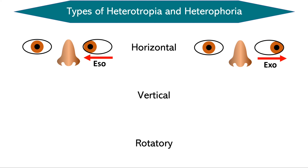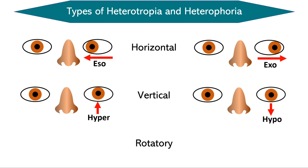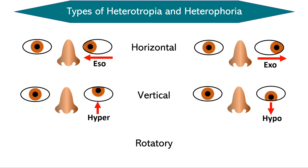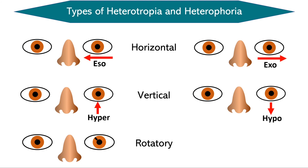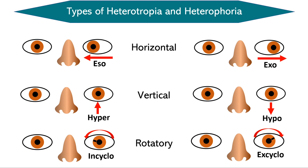Vertical deviation can be of two types: upward deviation known as hyper, and downward deviation known as hypo — giving hypertropia, hyperphoria, hypotropia, and hypophoria. Rotatory deviation is also of two types: inward rotation toward the nose is incyclo, and outward rotation toward the temple is excyclo — giving incyclotropia, incyclophoria, excyclotropia, or excyclophoria.